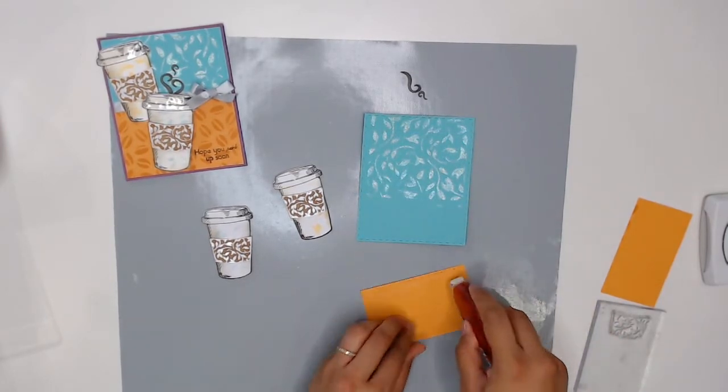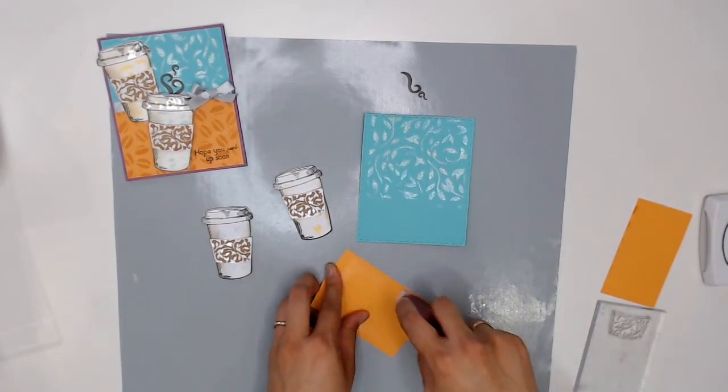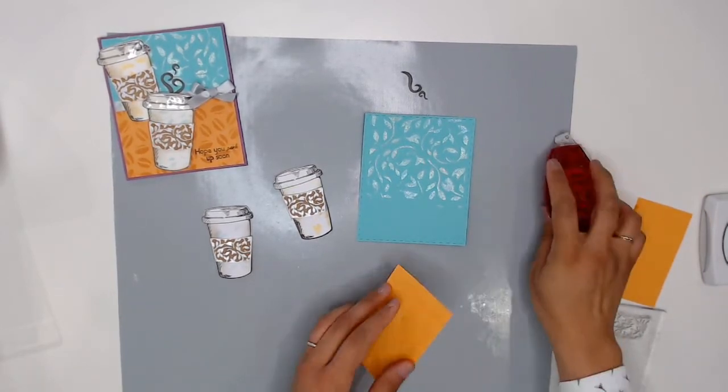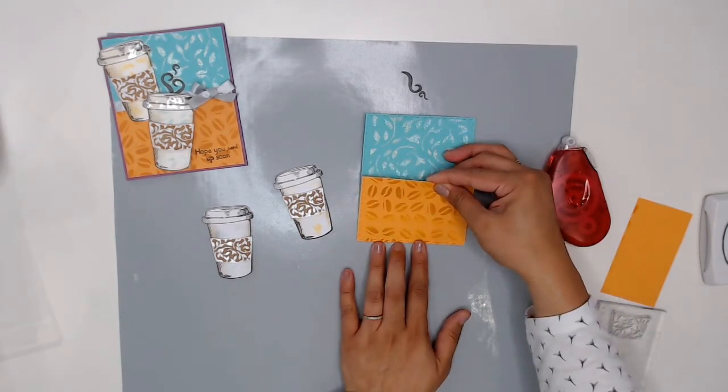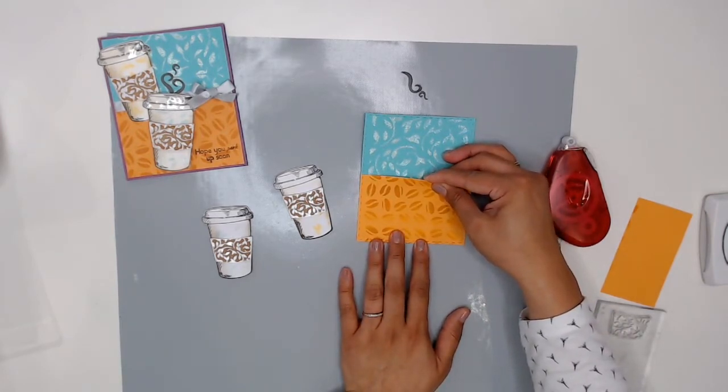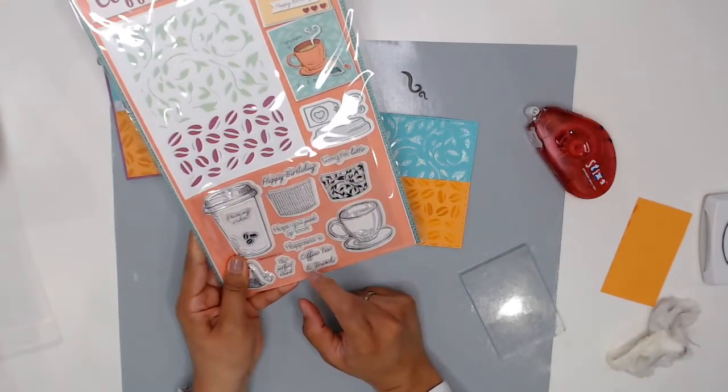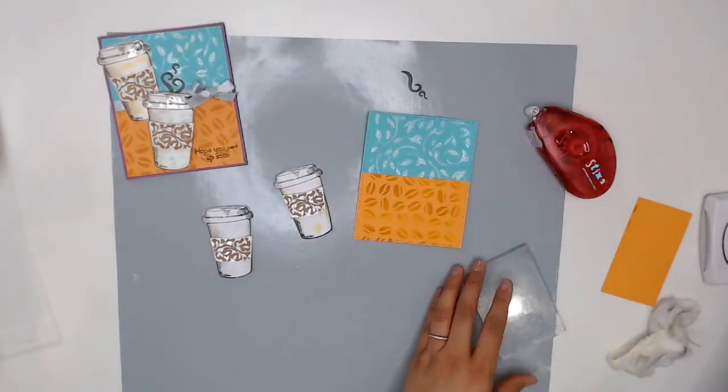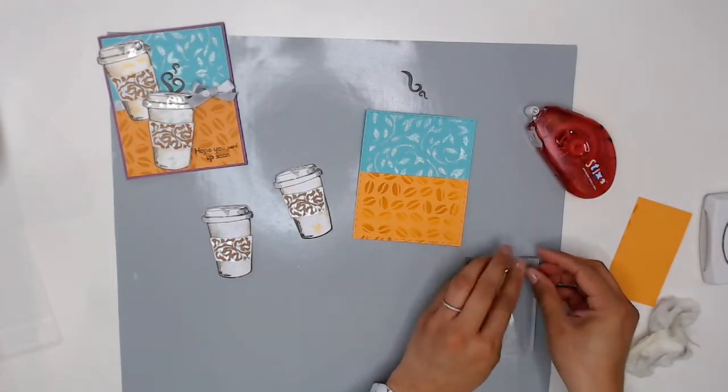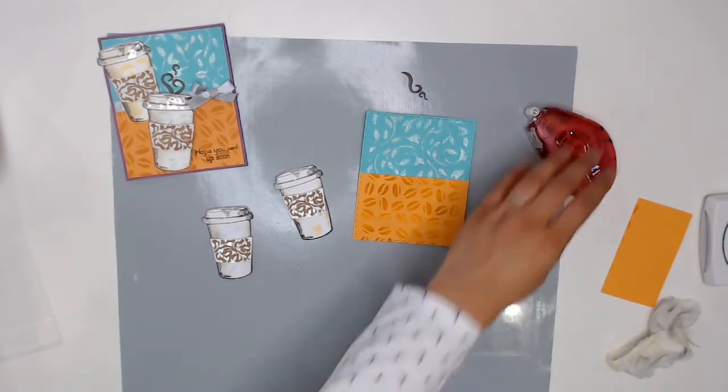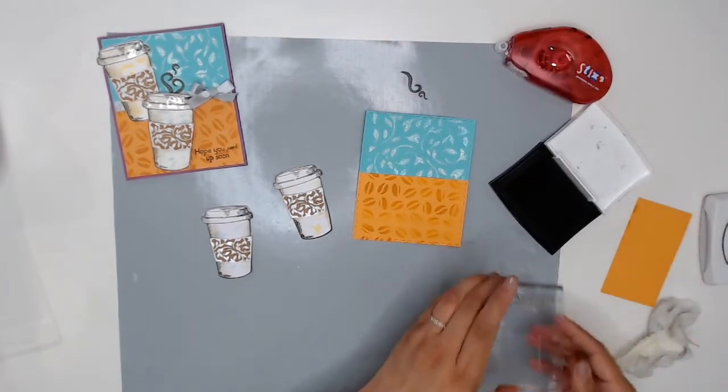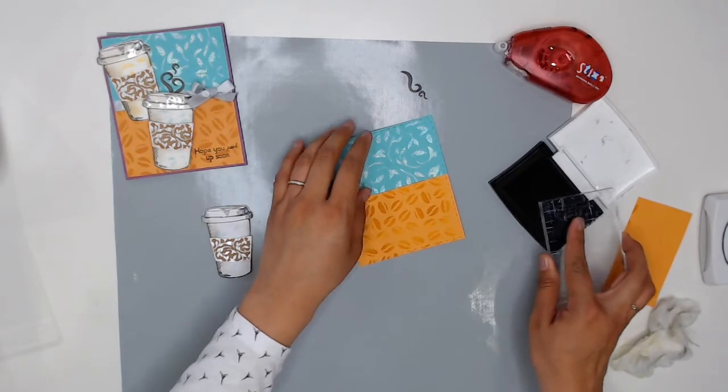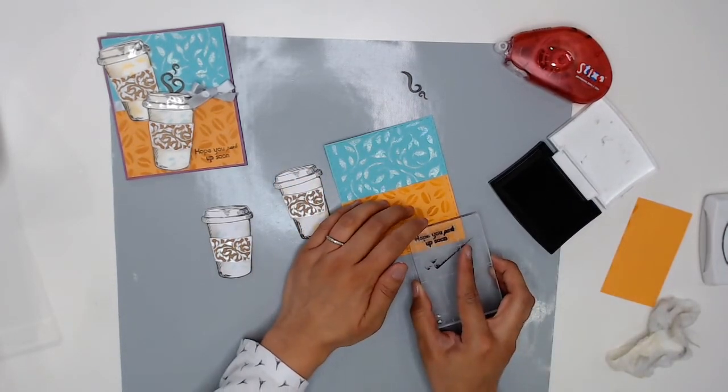Now I'm going to take my tape runner and put a little adhesive on the back and then layer that right on top of the aqua cardstock. Before I move on I wanted to add one more sentiment from the coffee break gift set and it's hope you perk up soon and I'm just going to stamp that right on this little corner here using some Versamark ink again. So there's my ink and let me make sure the stamp is nice and straight and then we're just going to put that right on this corner here.